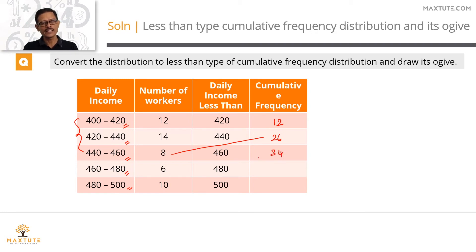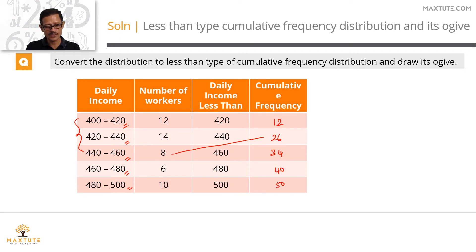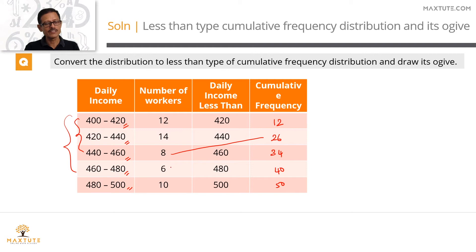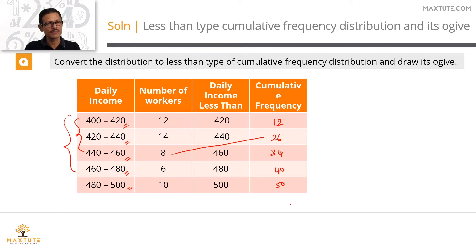How many earn less than 480? That's 34 plus 6, which equals 40. And less than 500? That's 40 plus 10, which equals 50. Everyone is earning less than 500, so all 50 workers are included. This gives us the complete cumulative frequency distribution.